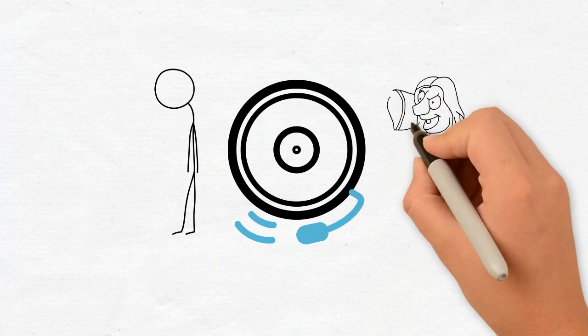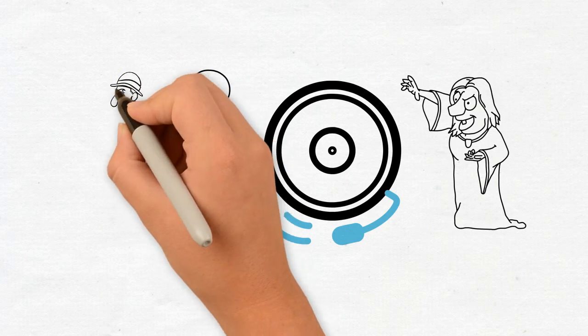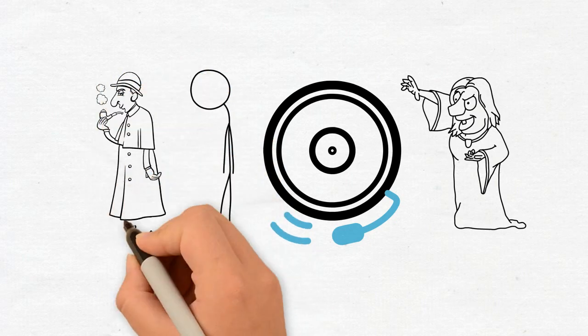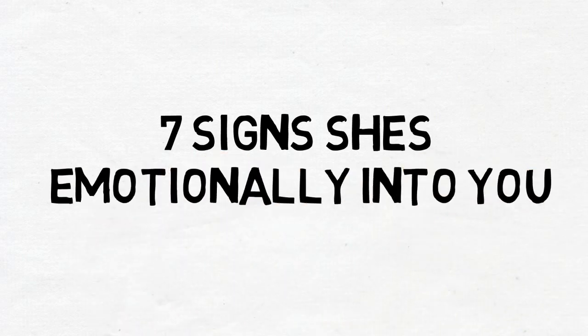Unless you can read minds, there's really no way to know exactly how someone feels. But there are some telltale signs you can look out for to clue you in. Here are seven signs to look out for to tell if she's emotionally into you.